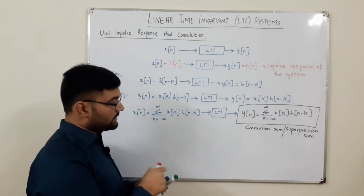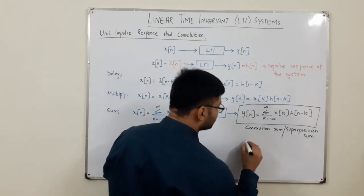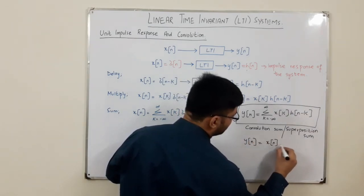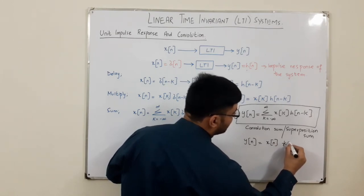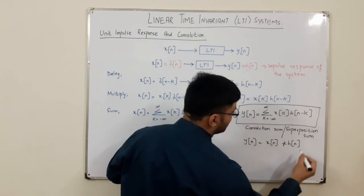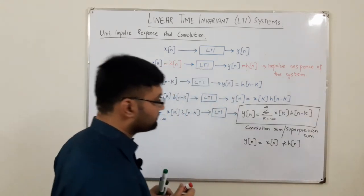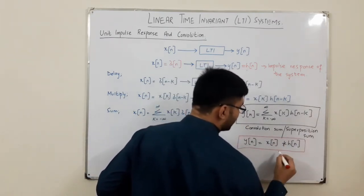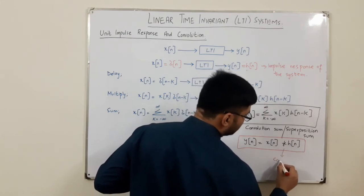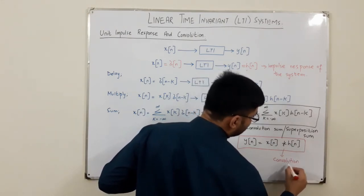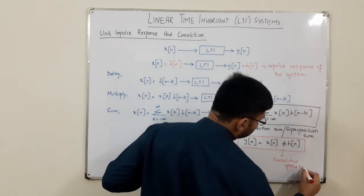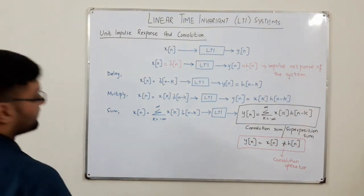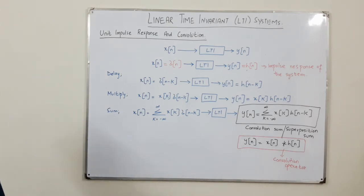Mathematically and symbolically, we represent it as Y of n equals X of n convolved with H of n. This star sign is known as the convolution operator. Confirming in the book — yes, it is the convolution operator and there is no minus k in the symbolic notation.